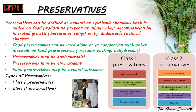Preservatives may be antimicrobial, which inhibits the growth of bacteria and fungi. Example: calcium propionate, sodium nitrate etc. Preservatives may be antioxidant such as oxygen absorbers, which inhibit the oxidation of food constituents. Example: BHA (butylated hydroxyanisole) and BHT (butylated hydroxytoluene). Food preservatives may also be natural substances such as salt, sugar, vinegar, citric acid etc., used as traditional preservatives.